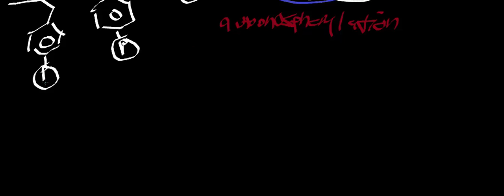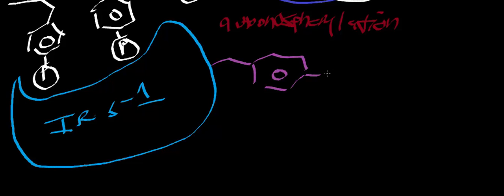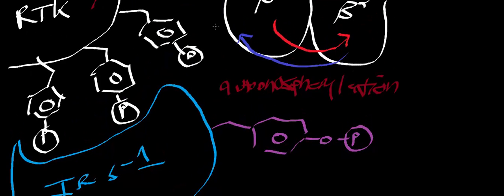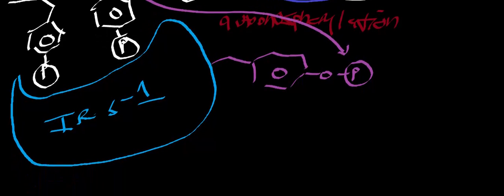The first thing that's going to come and get phosphorylated is a protein called IRS-1 — insulin receptor signal 1. It's going to get phosphorylated at tyrosine residues, just like the actual beta subunit. So these phosphate groups ultimately came from one of the beta subunits — the phosphate came from ATP, but the actual catalysis was catalyzed by the beta subunit. So you get phosphorylated tyrosine residues on IRS-1.